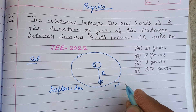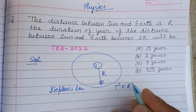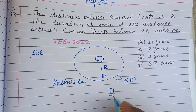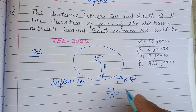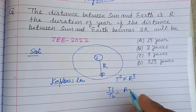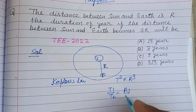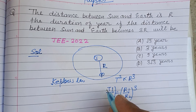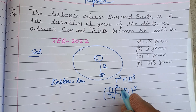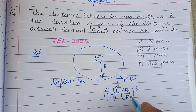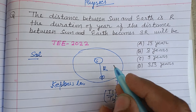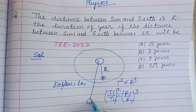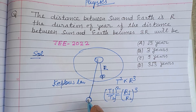We know by using Kepler's Third Law that T² is directly proportional to r³. From here, (T1/T2)² = (r1/r2)³. Now this distance becomes 3r.